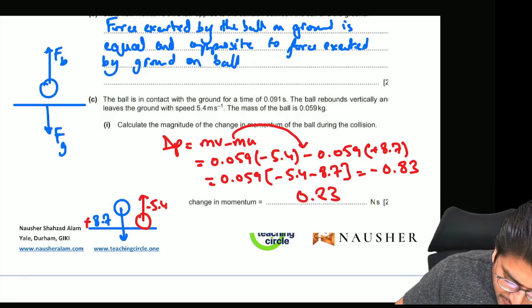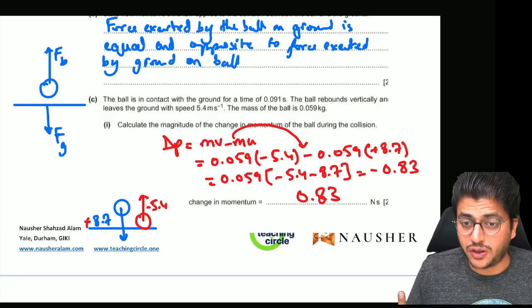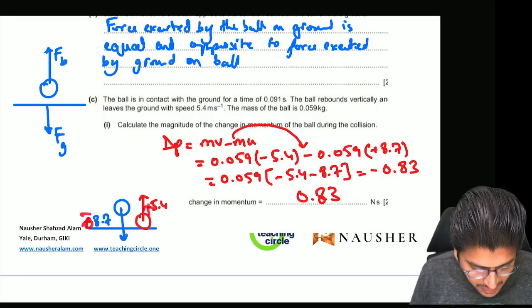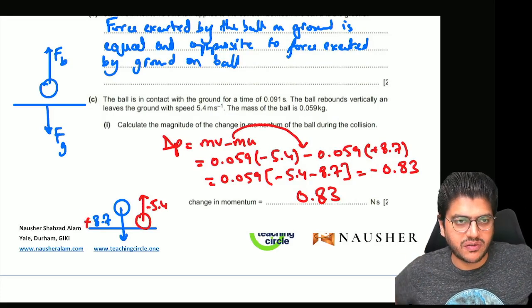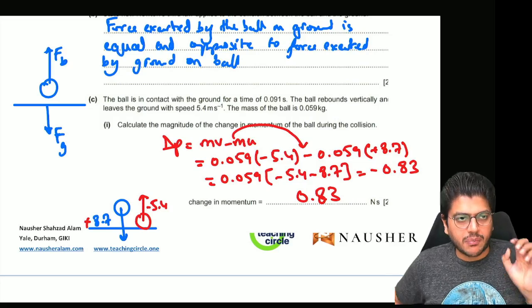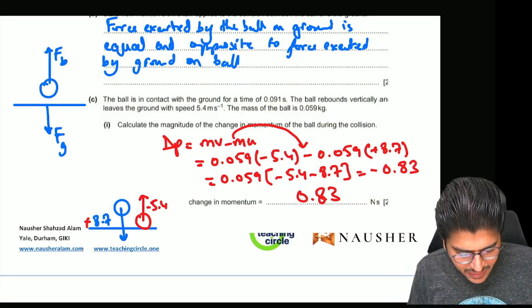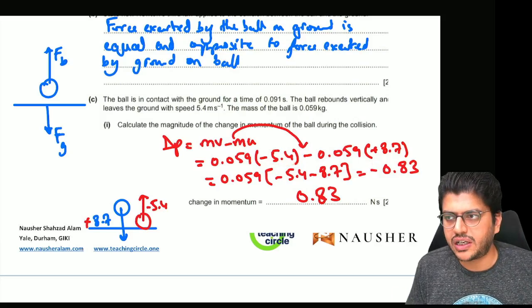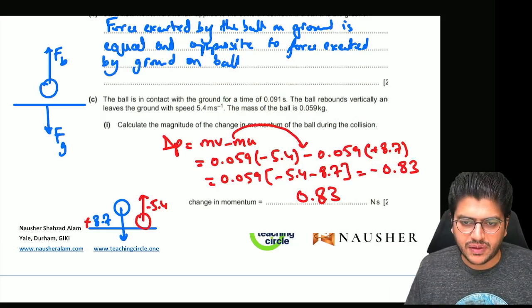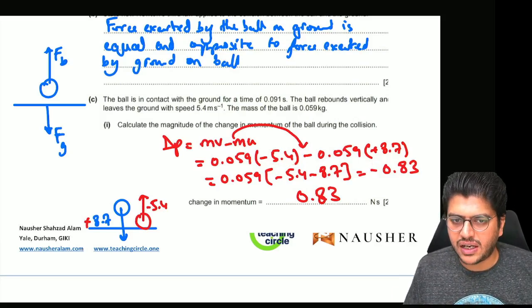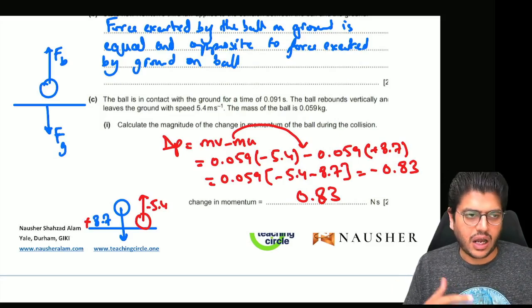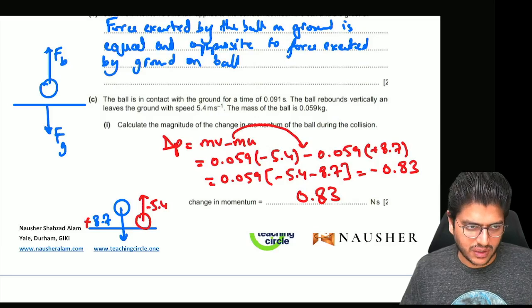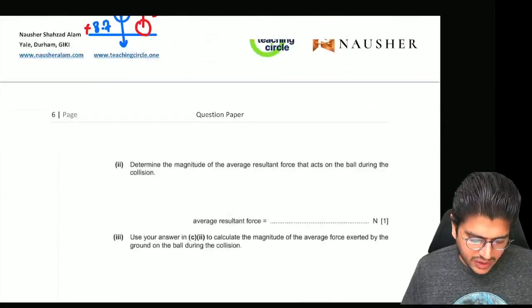You can write that as minus 0.83, but look at the question—they're only asking for the magnitude of the change, so you should ignore the negative sign. They asked for the magnitude because there could be students who would take this direction as plus and this direction as minus. But if you don't change signs and simply take 8.7 and 5.4 and plug them in, you're not going to get the right answer. Taking the right direction as positive and negative is important; you can't do any vector question without that.